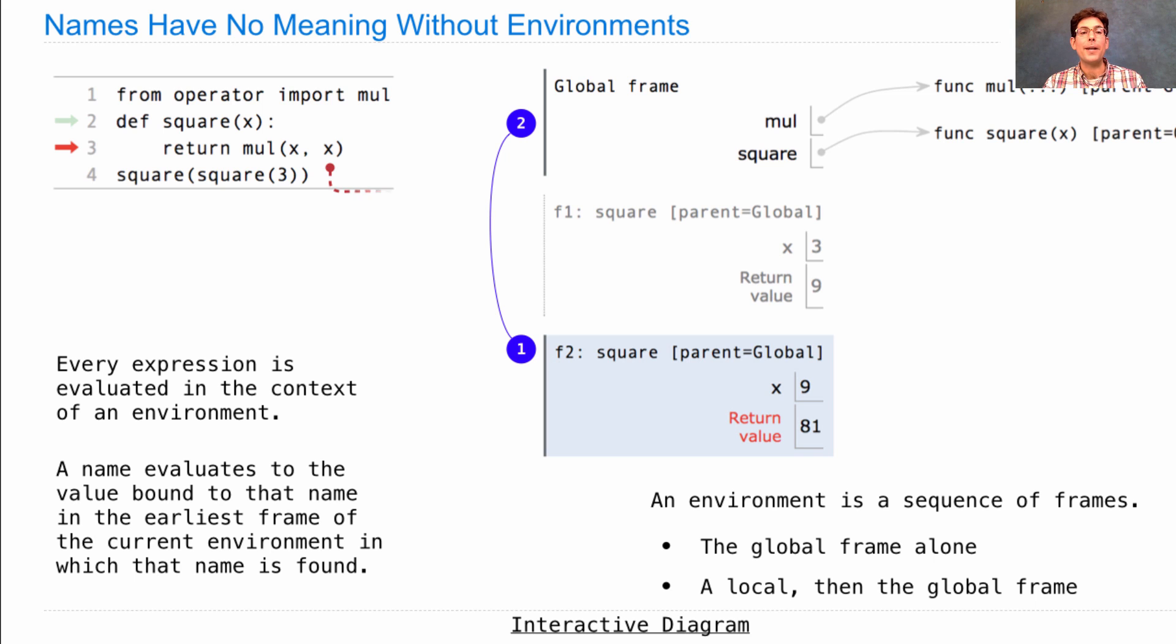When we go about looking up what x means, we first look in the local frame. Oh, there it is. x is 9. What about mul? Well, mul isn't in the local frame, but we did look there first. See that animation? We went down there and looked there first. There was no mul, so then we looked in the next frame of the environment, which was the global frame, and there was mul, and so we know that we're supposed to multiply 9 times 9.